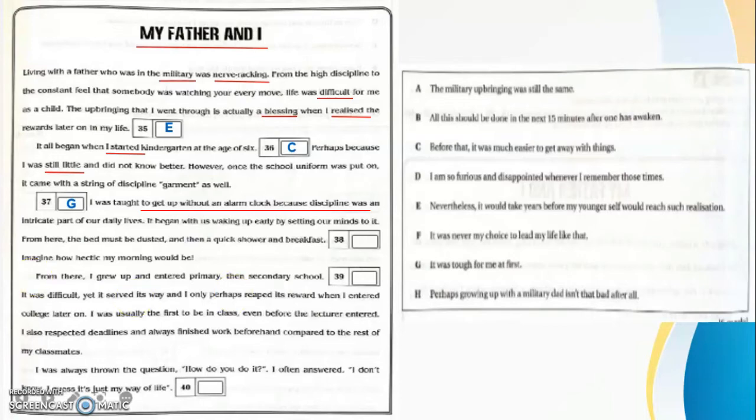And then 37, the answer is G: 'It was tough for me at first.' We'll try to read whether it should or not. The upbringing that I went through is actually a blessing when I realized the rewards later on in my life. Nevertheless, it would take years before my younger self would reach such realization. And then question 36: It all began when I started kindergarten at the age of six. Before that, it was much easier to get away with things.